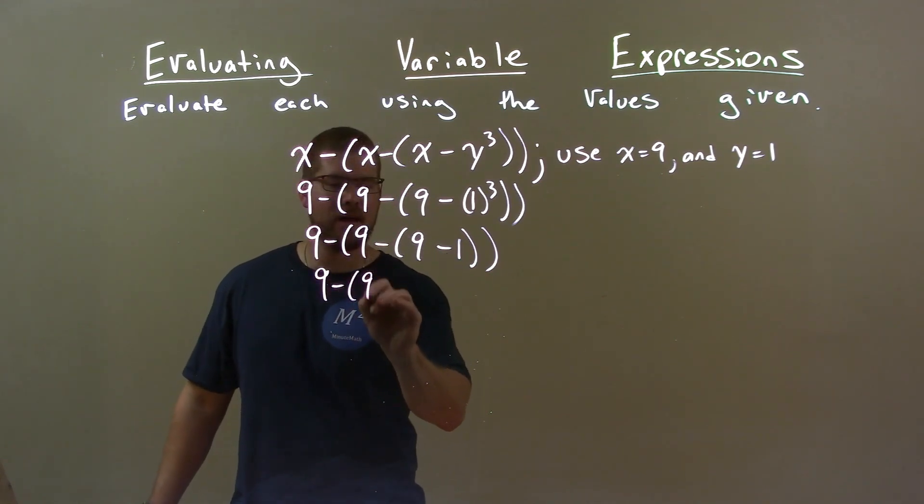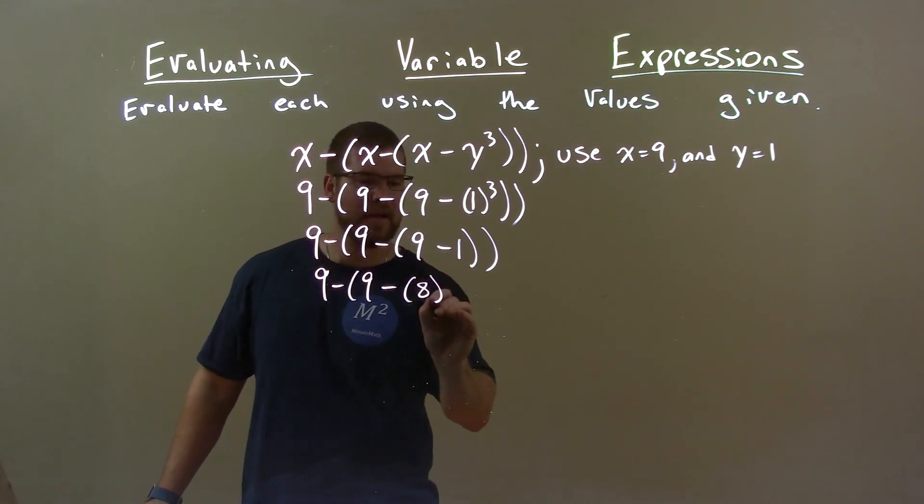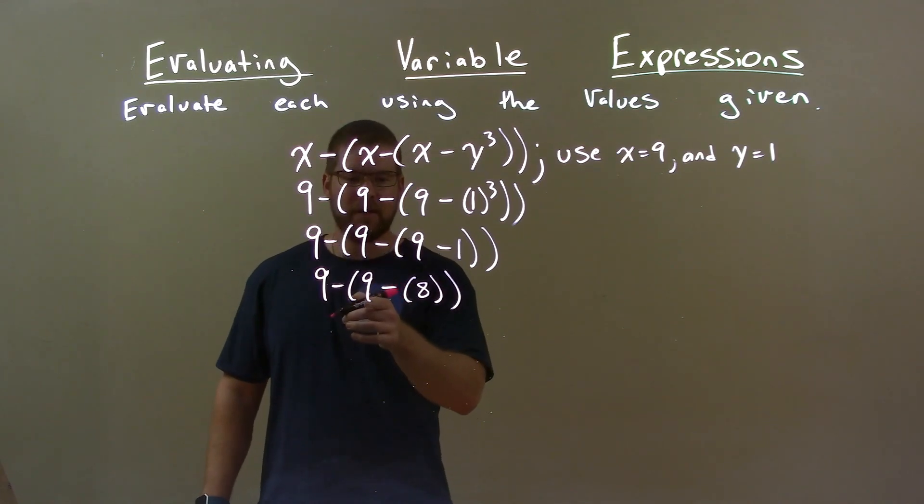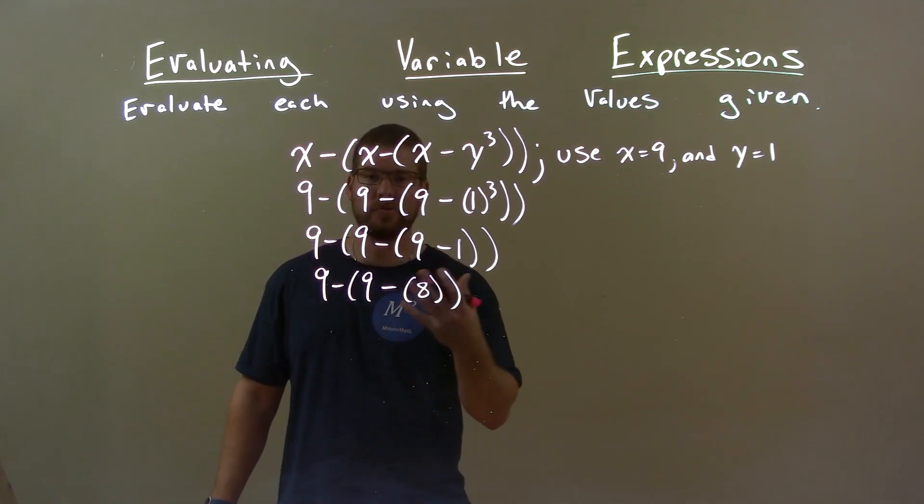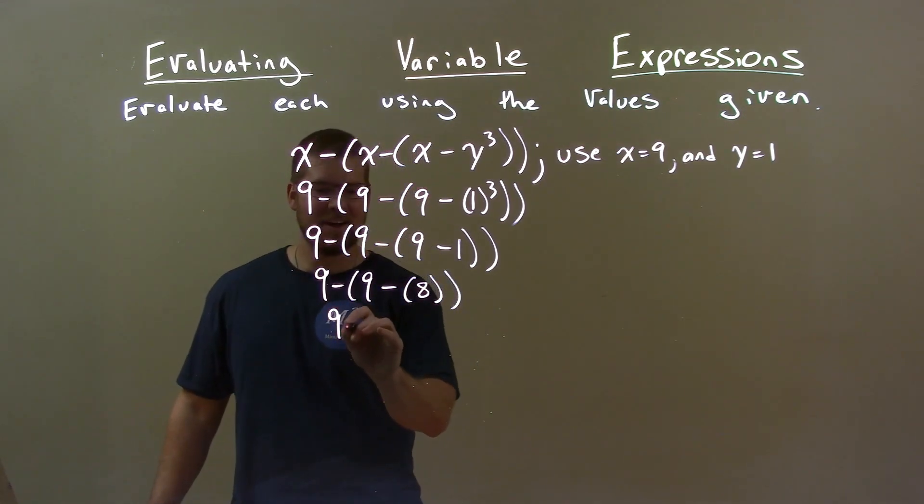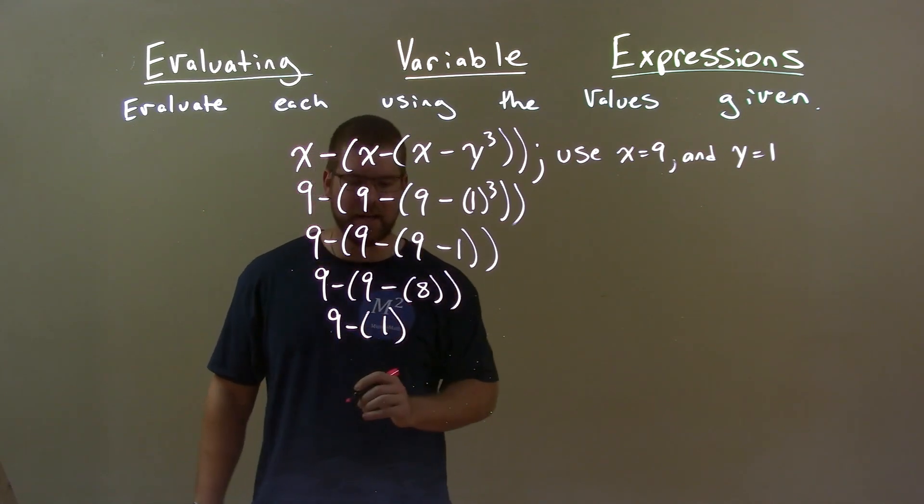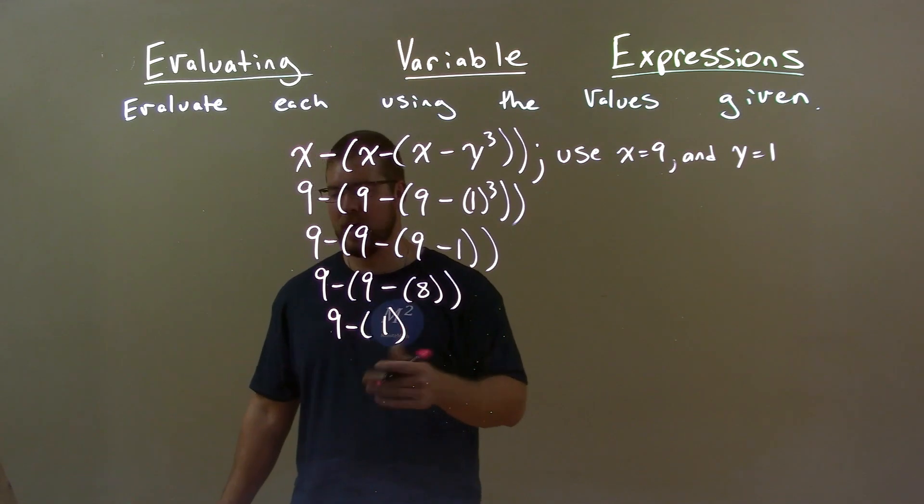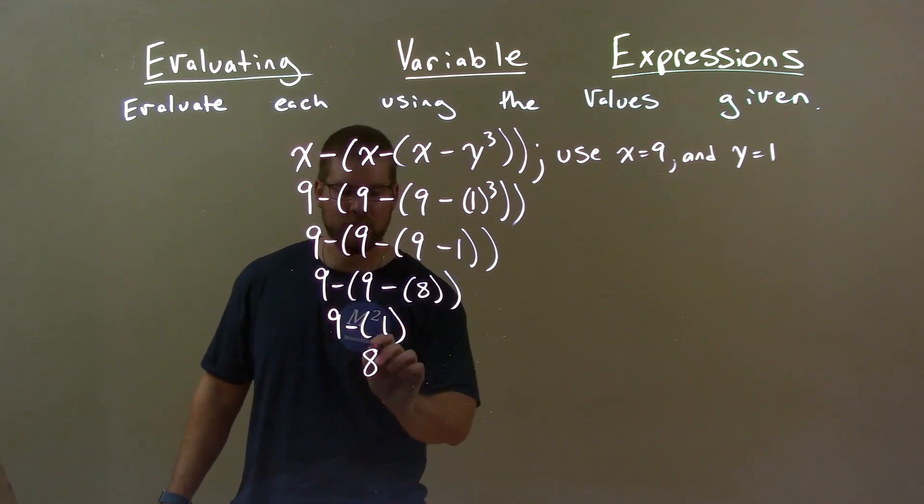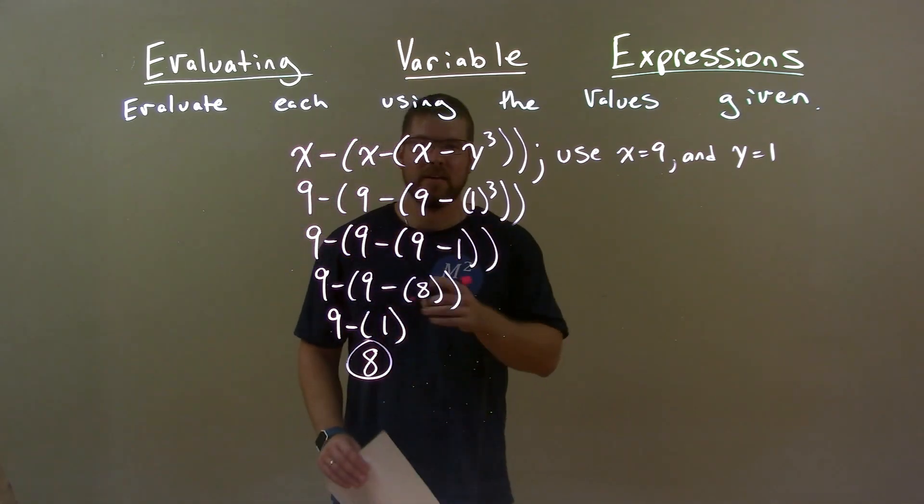9 minus 9 minus 8. Now 9 minus 8 is back to 1. So we have 9 minus 1 here. Okay, remember 9 minus 8 being 1. Now what's left? 9 minus 1 is just 8. And so 8 is our final answer.